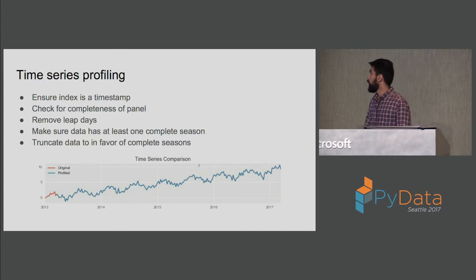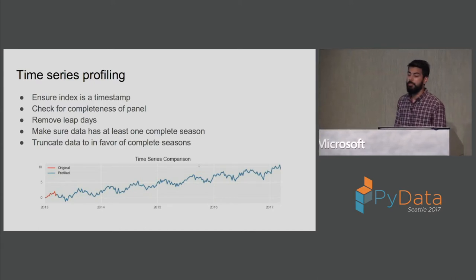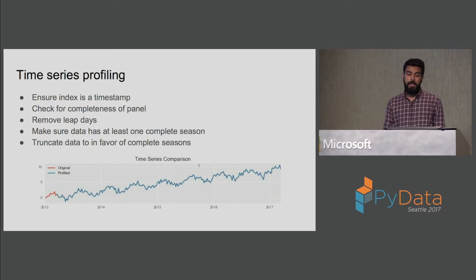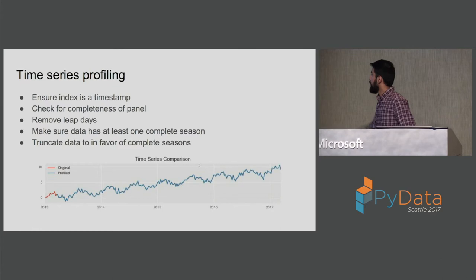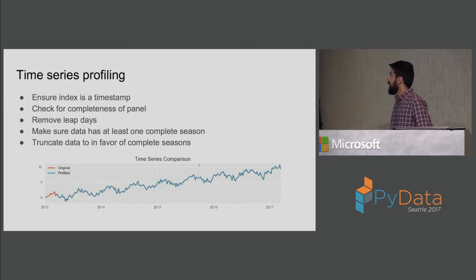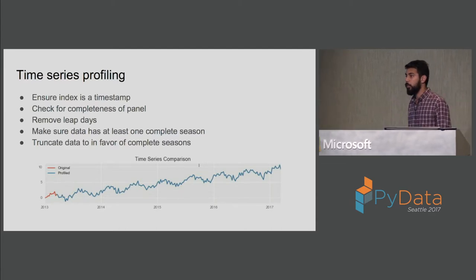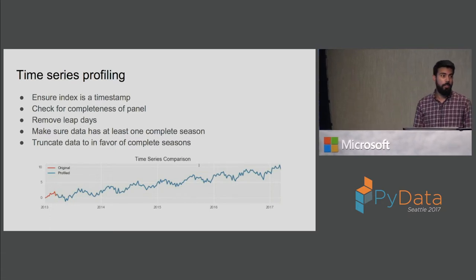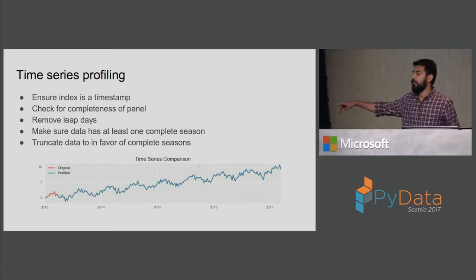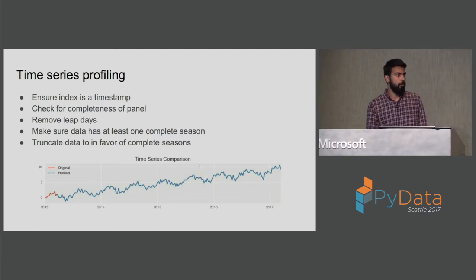To demonstrate profiling: in the graph, red reflects the original time series and blue reflects the profiled time series. There's some data after 2017 that doesn't appear to be a complete season, so we get rid of that extra data. Rather than removing data from recent history, we remove it from the past, because recent observations are more useful for making future predictions.